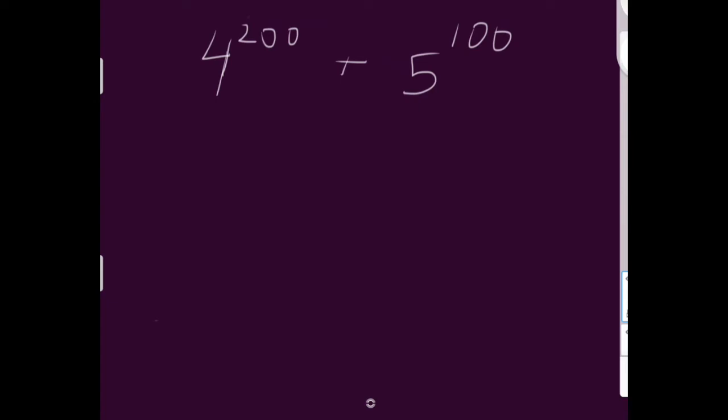So let's do one more problem just to make sure we've really got it. We've got 4 to the power of 200 plus 5 to the power of 100, and we're not asking for the whole thing. We're just finding that final digit.